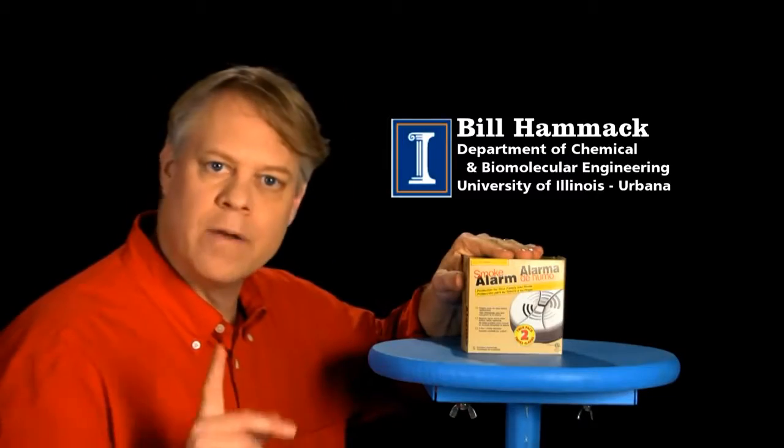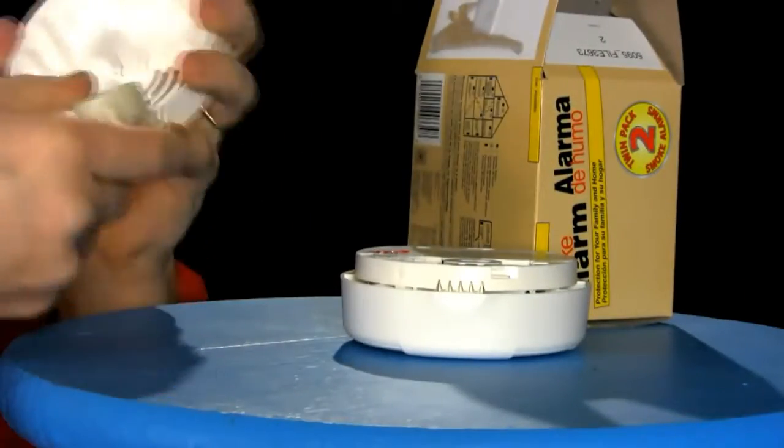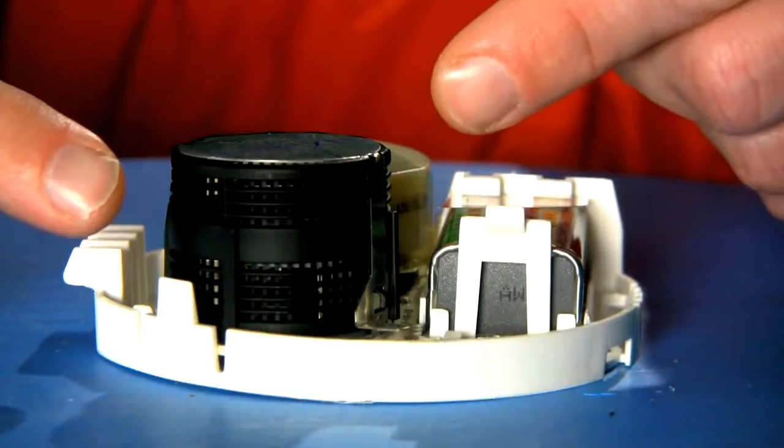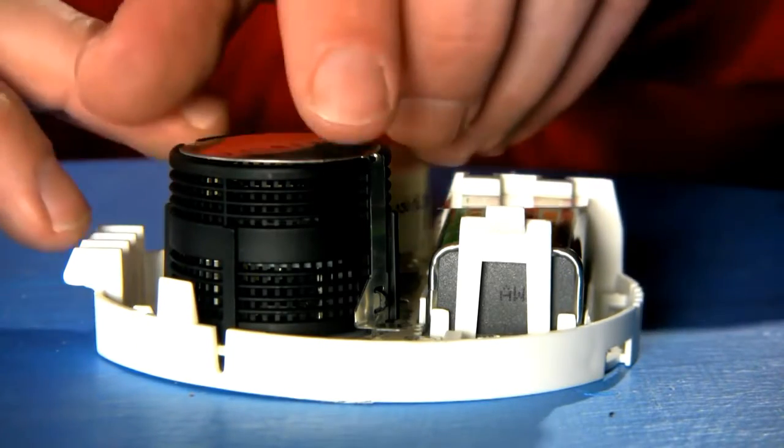I find smoke detectors a marvel of engineering. Let me show you how it works. This black cylinder has louvers which guide air into the detector. Now it hides the essential part of the device.